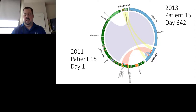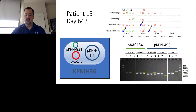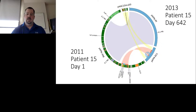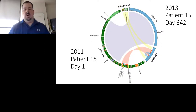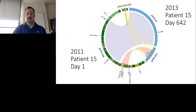Chunks of that larger plasmid have been lost, including the iron acquisition region marked by the FECD gene — which was one of the markers we were tracking. The PKPQIL plasmid, the important one, didn't really change for this particular isolate. But these recombination events show how dynamic plasmids can be.